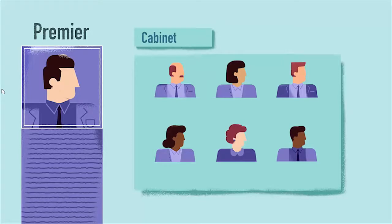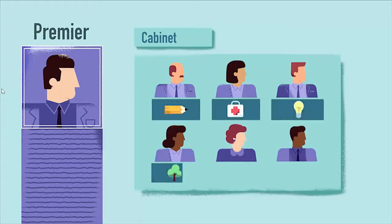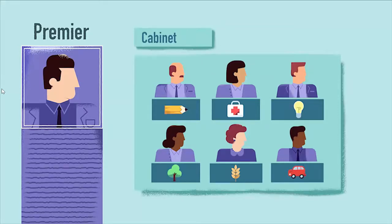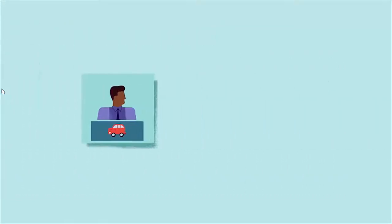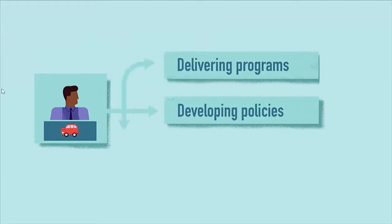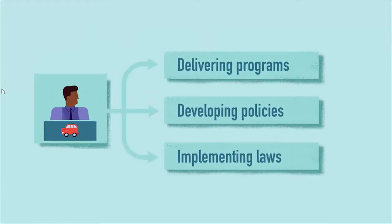The Premier then chooses MPPs to be part of their cabinet. The cabinet ministers are responsible for leading ministries, which deliver vital programs and services associated with one area of responsibility. The executive branch is responsible for developing policies, delivering programs, and implementing laws.